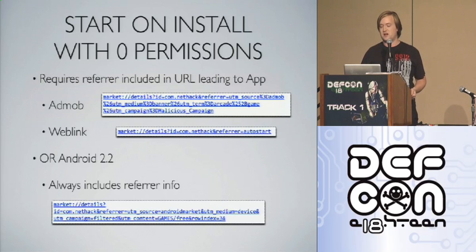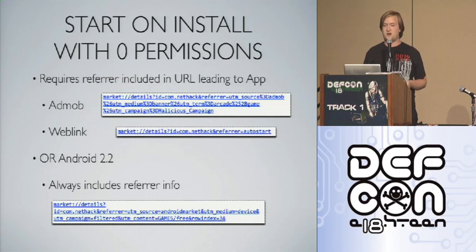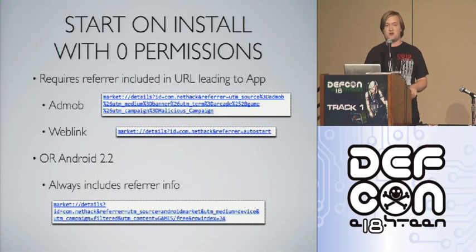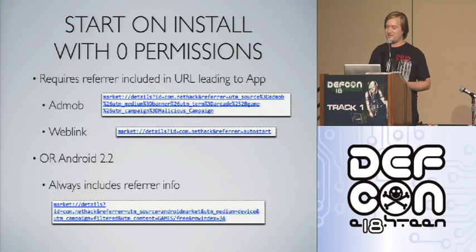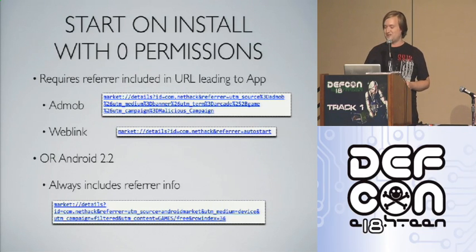There are some caveats: it requires a referrer to be included in the URL, either via an AdMob link or any link in a browser with referrer info appended. On Android 2.2 Froyo, the Android Market always includes referrer info — things like which tab you downloaded from, the section, and the row index. So this now always works on Froyo and you can use it to start on install.